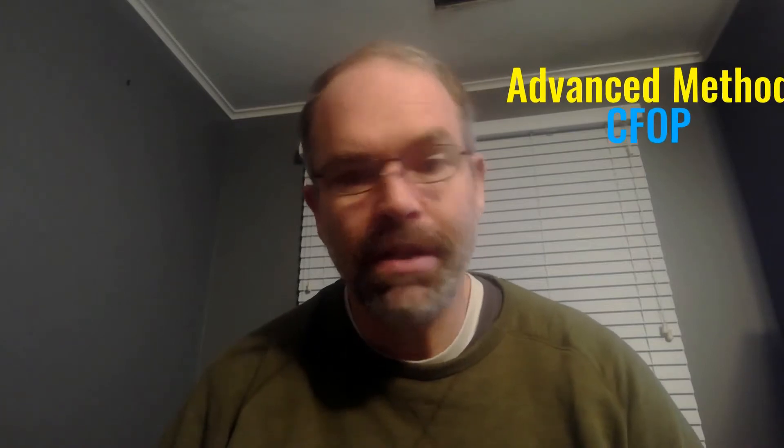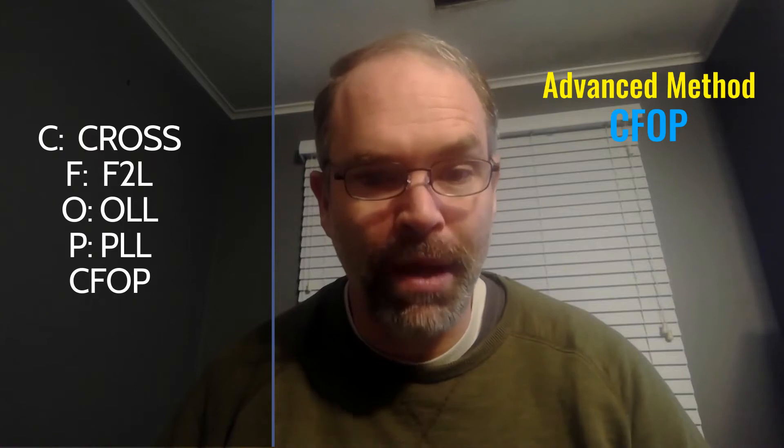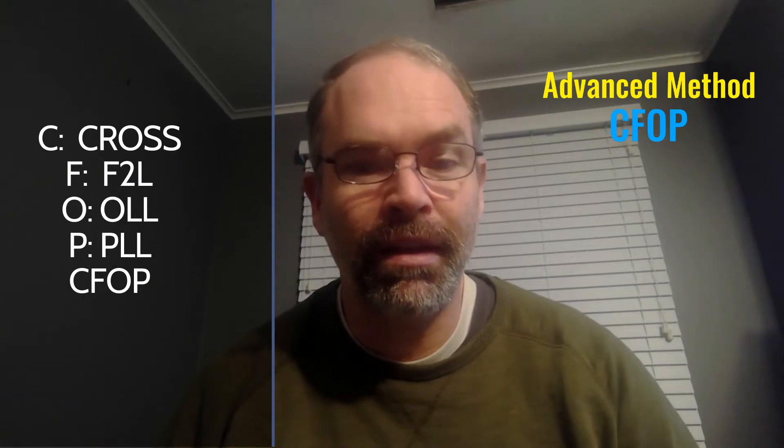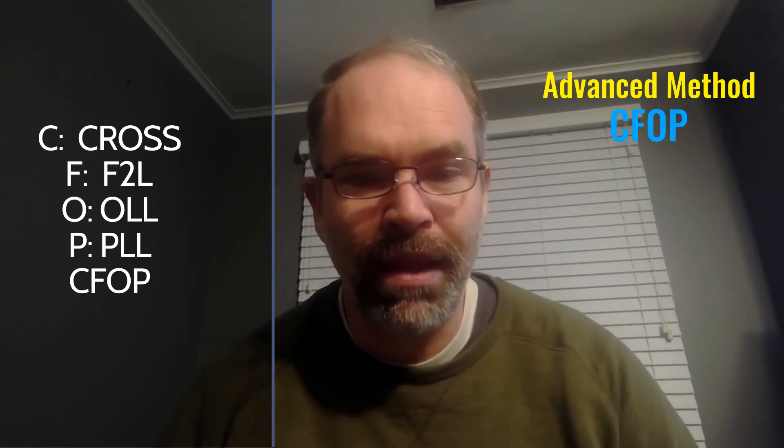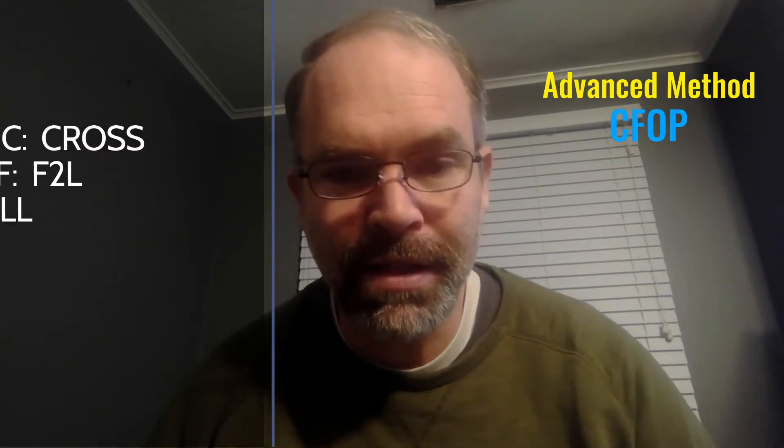In our last video, we began the process of learning F2L, first two layers, which is the second part of CFOP, the advanced method for solving a Rubik's Cube. CFOP, of course, meaning the C stands for cross, white cross, the F, first two layers, this part. And then the O is orient last layer, and the P, PLL, is permutate last layer.